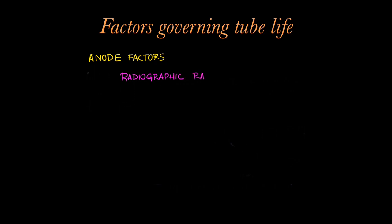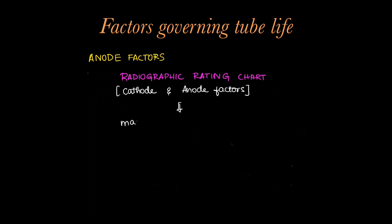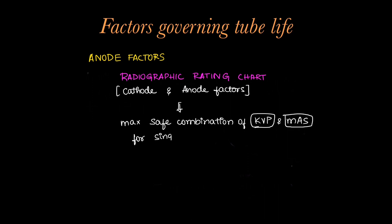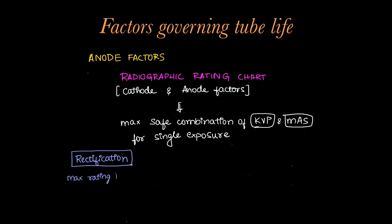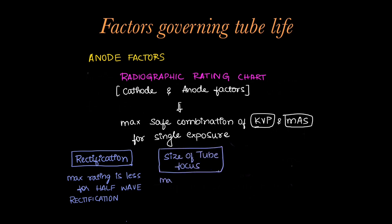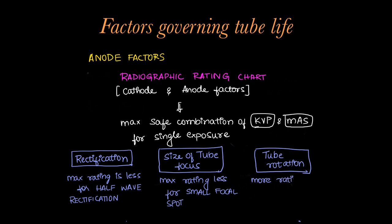Each x-ray tube comes with a radiographic rating chart which considers both cathode and anode factors. It determines the maximum safe combination of voltage and filament current at which the x-ray tube can be used for a single exposure. This depends on three factors. The maximum rating is less for half wave rectification compared to full wave rectification. Rating is also less for a smaller focal spot. Higher rating is given when there is high disc rotation speed and a smaller anode angle.